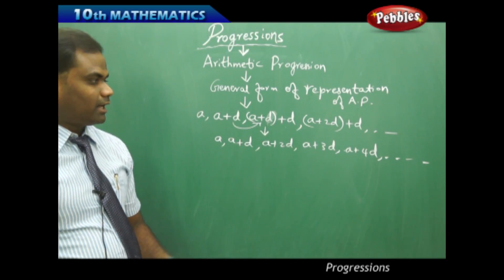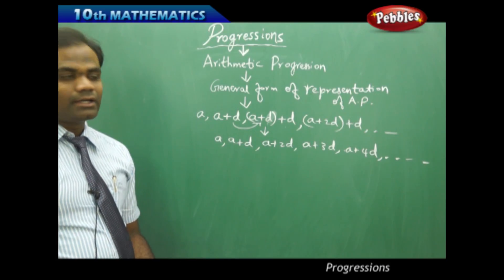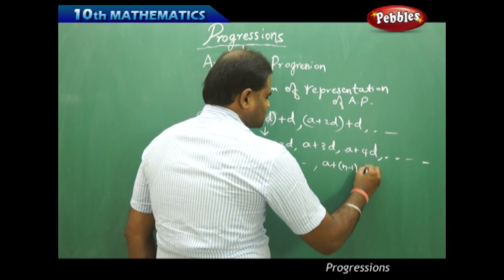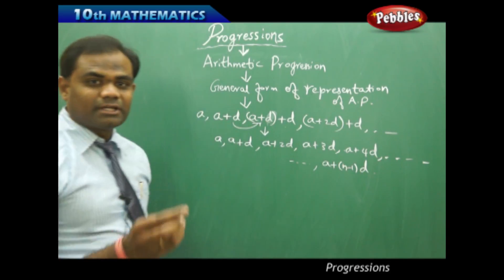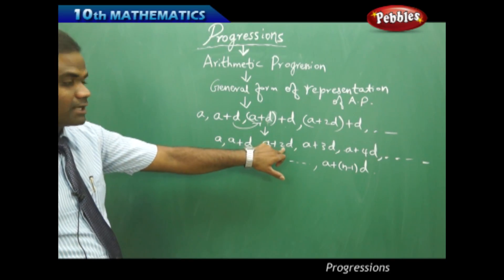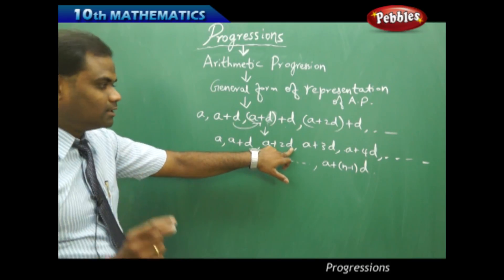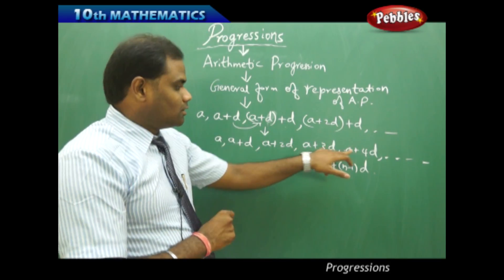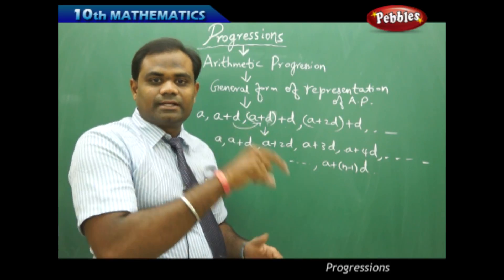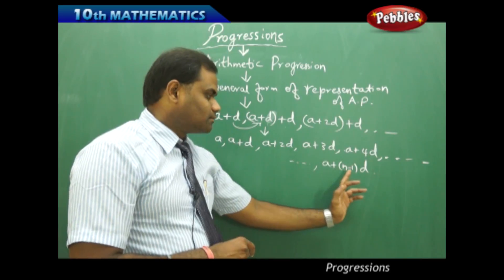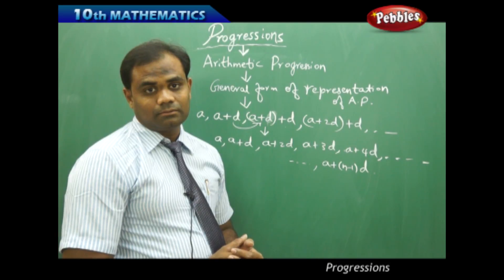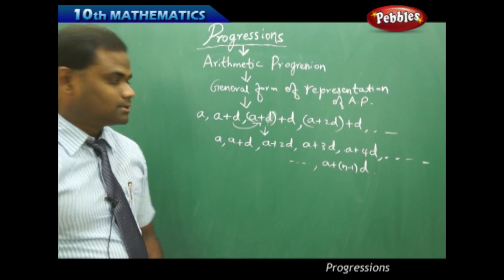If we consider the first N terms, the last term reduces to A plus N minus 1 times D. The reason being that the second term has 1D, the third term has 2D — one less than 3 — the fourth term has 3D — one less than 4 — and the fifth term has 4D. So the Nth term has N minus 1 times D. Therefore the Nth term is A plus N minus 1 times D.